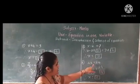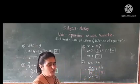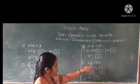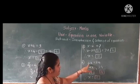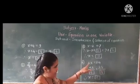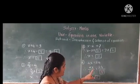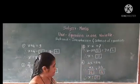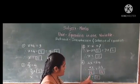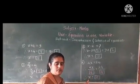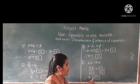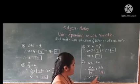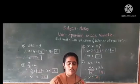Next example: 4x is equal to 24. Here 4 and x are in multiplication form, so we divide both sides by 4. 4x divided by 4 equals 24 divided by 4. The 4 gets cancelled out, only x remains on the left hand side. 24 divided by 4 gives 6, so the value of x is 6.